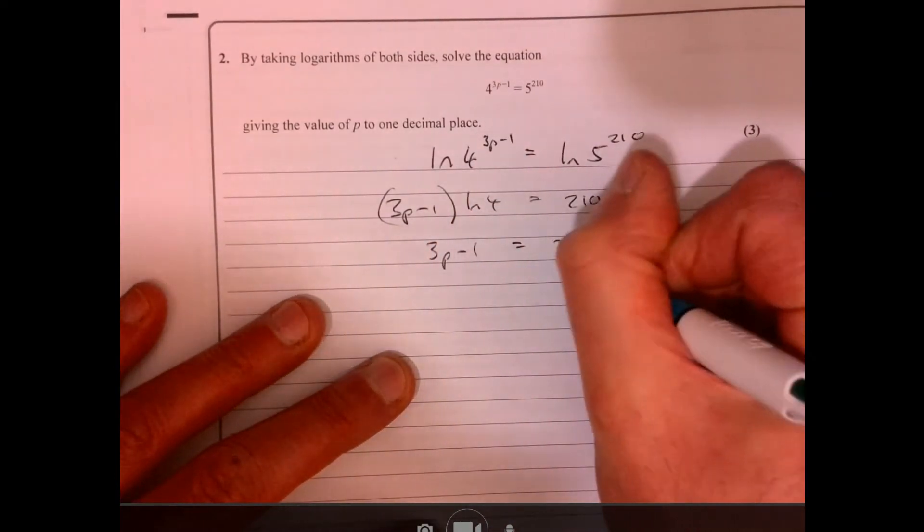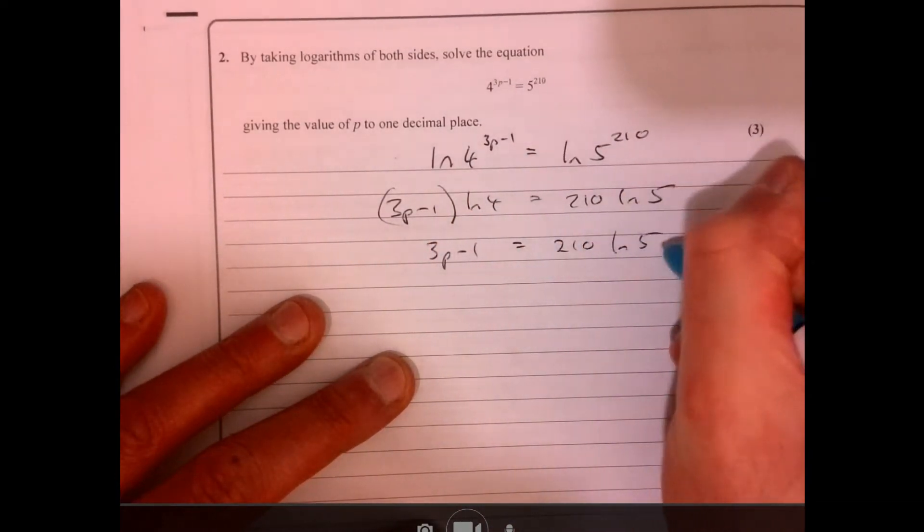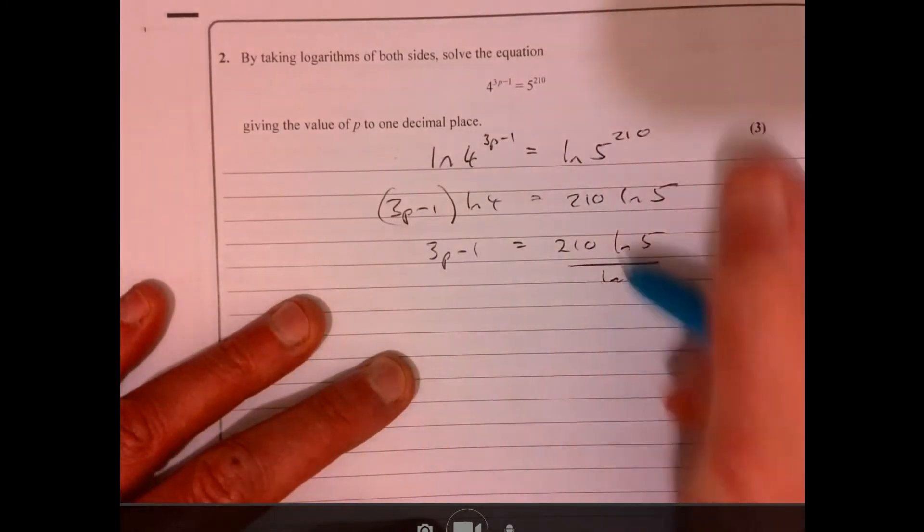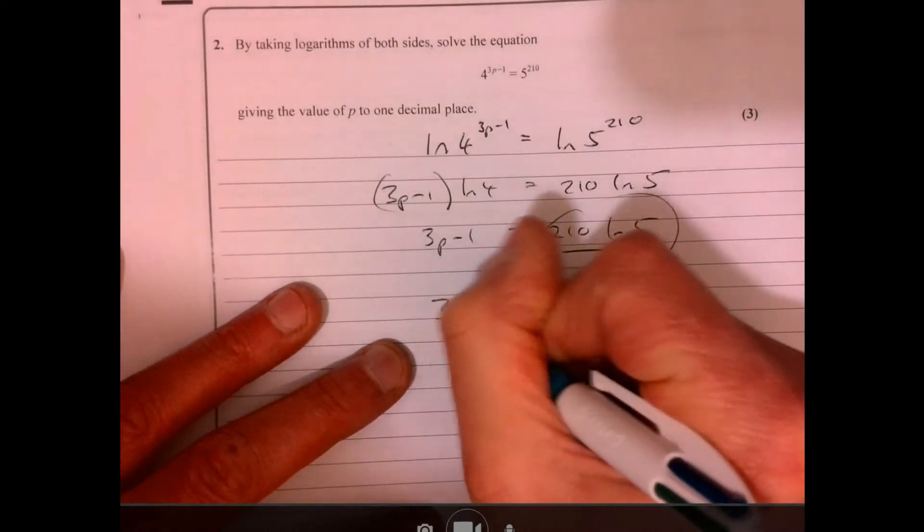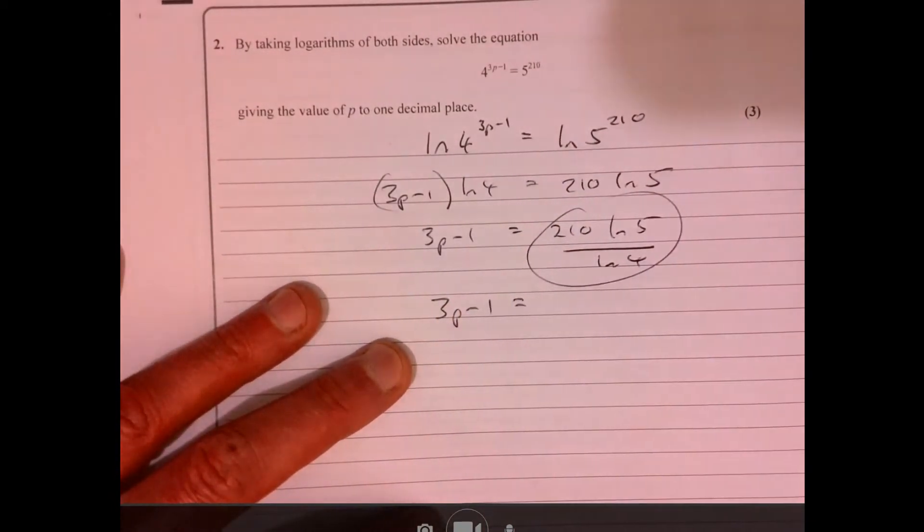Let's get that p on its own because remember we're trying to work it out. Go for this, it's just gonna be a number. You can work it out so 3p minus 1.